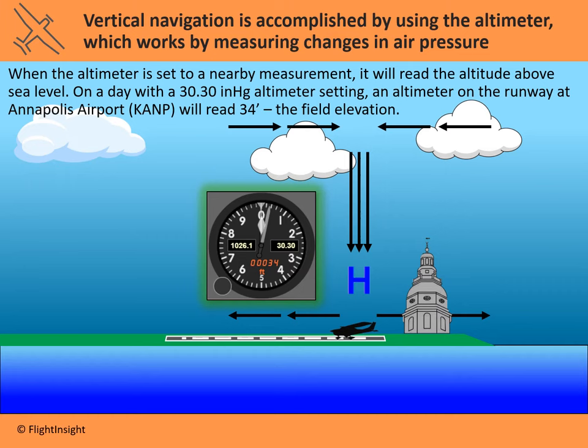As you get higher and lower, those changes in pressure will register as changes in altitude. So we need to tell the altimeter what the sea level pressure is so that it knows how high or low we are by measuring the air pressure. You set your altimeter to a nearby pressure measurement, which you can get from a METAR, air traffic control, or an ATIS broadcast.